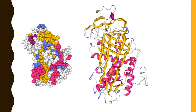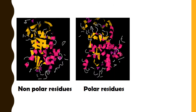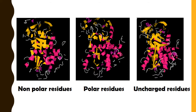So what makes Antithrombin so special? He's composed of a mix of alpha helices and parallel beta sheets. At 432 residues long, with a good mix of polar and non-polar residues, he's the perfect shape and size for a protease inhibitor. Being a blood protein, Antithrombin has a large number of polar residues on his external surface and some non-polar residues hidden inside. Though he's composed mostly of uncharged residues, Antithrombin has enough charged residues to allow for the binding of cofactors and polysaccharides.